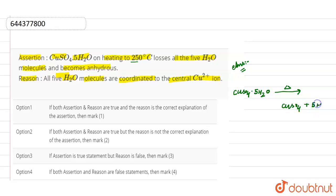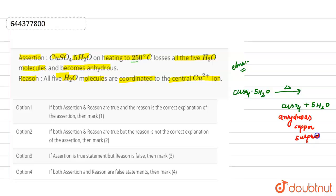We get anhydrous copper sulfate because water is removed. There is removal of all 5 moles of water. So the assertion — that this compound on heating at 250 degrees Celsius loses all 5 water molecules and becomes anhydrous — is correct.